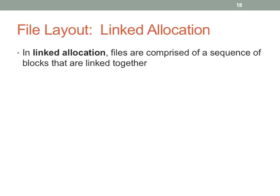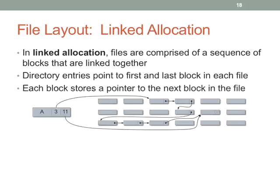That's extents and contiguous allocation. Now let's talk about more sophisticated allocation mechanisms. Linked allocation is basically a linked list of blocks. Directory entries point to the first and last block in each file, and each block points to the next block. That seems really easy. But the problem is this is really only good for sequential access — how do you do direct access? If you want to access byte 9,281, you can't map that directly; you have to chase through the linked list.